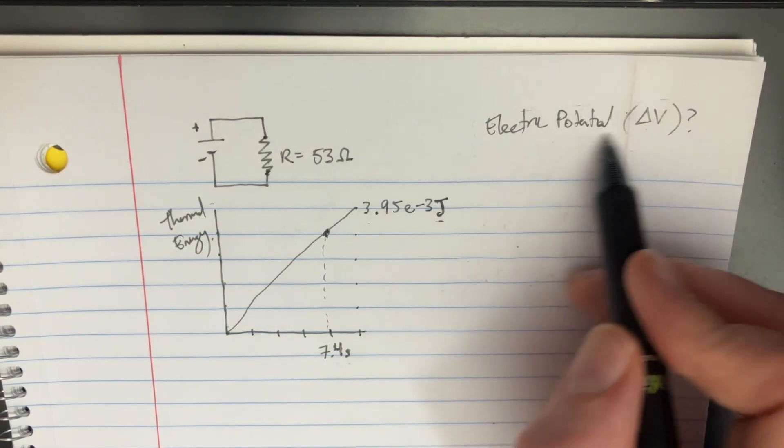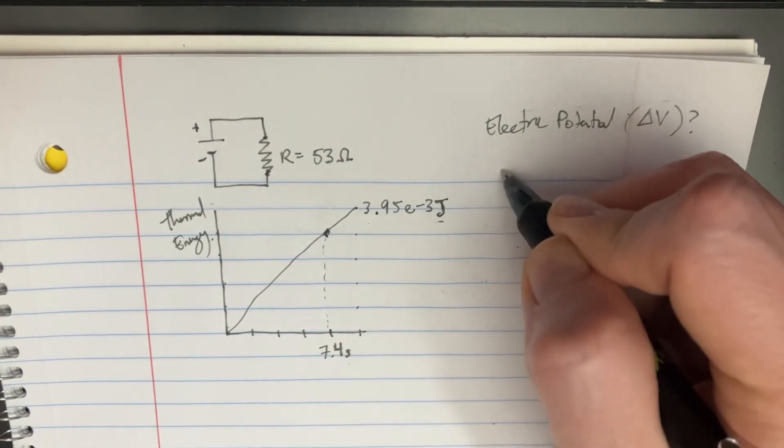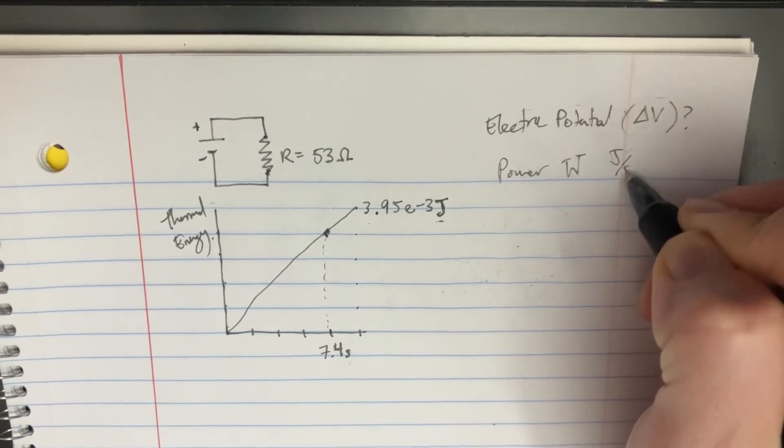We're asked for the electric potential, and if we're given joules and seconds here, then that's actually power, because power is watts, and that's joules over seconds.